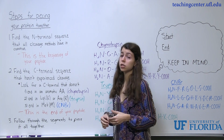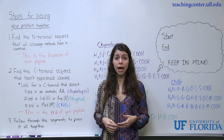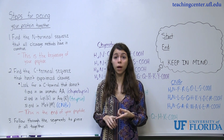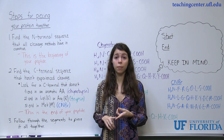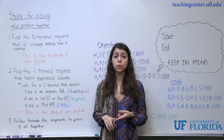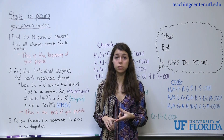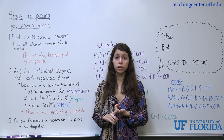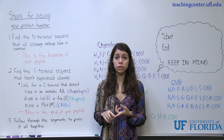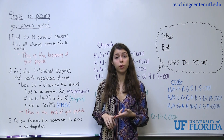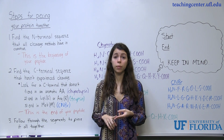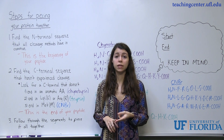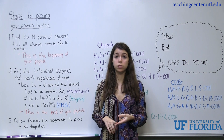We talked about three types of cleavage mechanisms in class. One was chymotrypsin, which is an enzyme that cleaves at the carboxy terminal of aromatic amino acids. Two is trypsin, which cleaves at the carboxy terminal of lysine or arginine. And cyanogen bromide, which cleaves at the carboxy terminal of methionine. Chymotrypsin and trypsin are both enzymes and cyanogen bromide is a chemical compound, but they all produce certain fragments and contribute to protein cleavage.